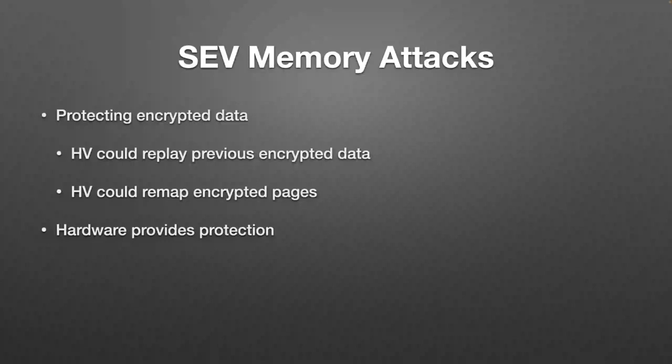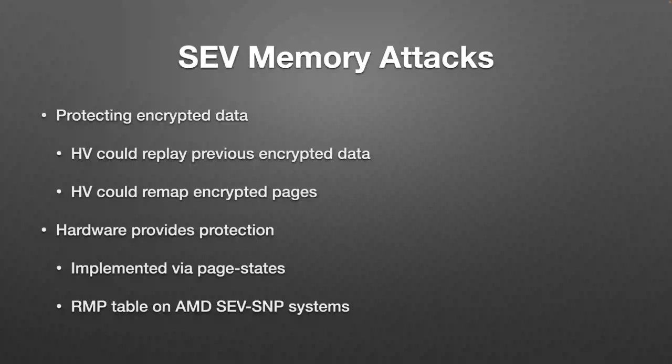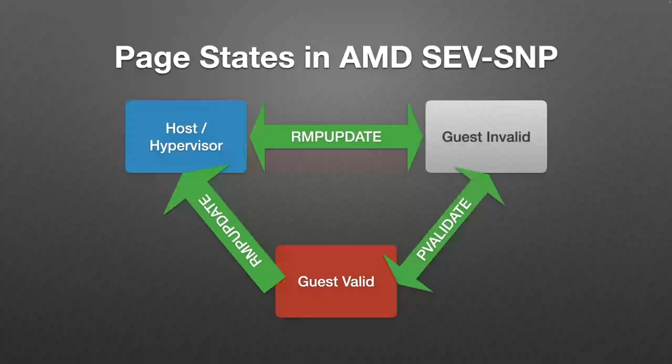SNP is implemented via a page state — each 4K page in the system is assigned a unique state, saved in a new in-memory data structure called the RMP table. Initially all pages are host/hypervisor pages, readable and writable by the hypervisor. If a guest maps such a page encrypted it gets an exception. To give a page to a guest as an encrypted page, the hypervisor calls the RMUPDATE instruction to change the page state to guest-invalid.